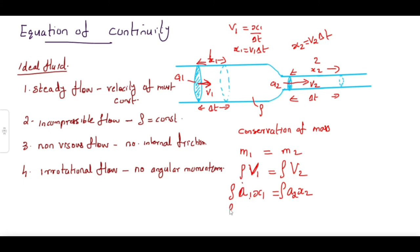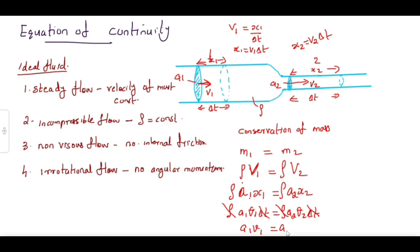Substituting the values: rho times A1 times V1 times delta T equals rho times A2 times V2 times delta T. Here V1 and V2 are the velocities — don't be confused. Now rho cancels on both sides, and delta T cancels since it is the same time interval. So we get A1 V1 equals A2 V2. Hence we have proved the equation of continuity.